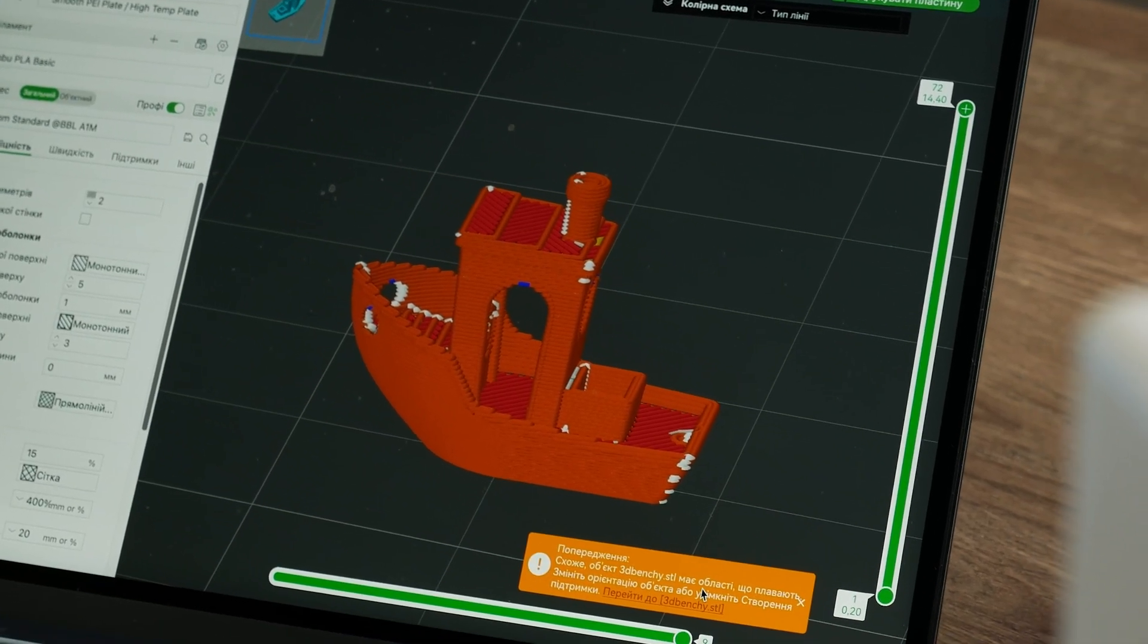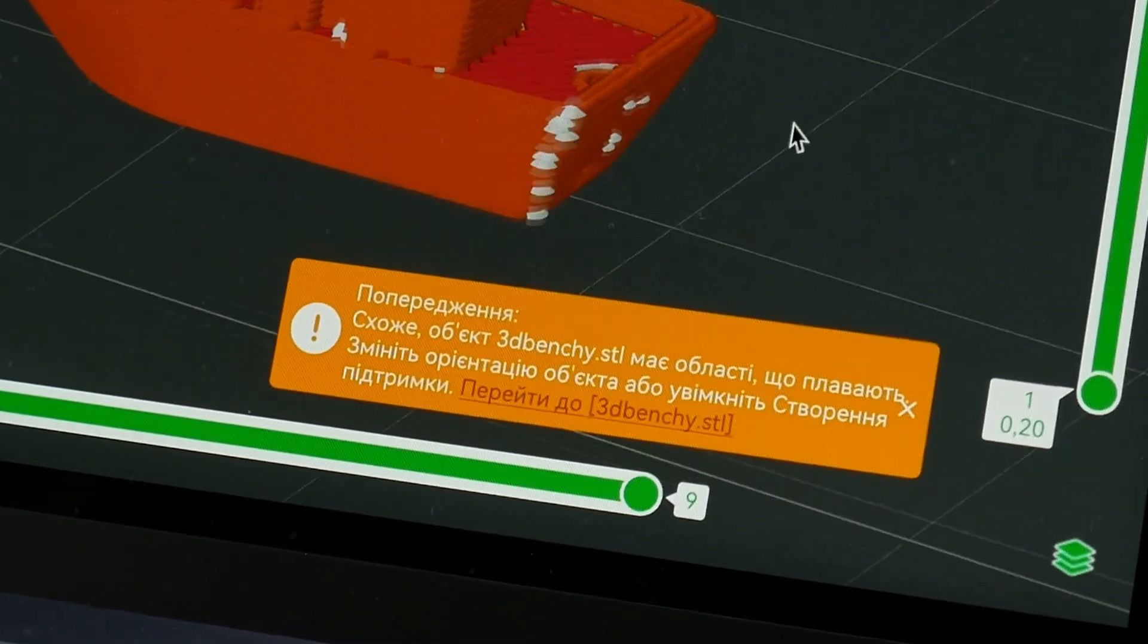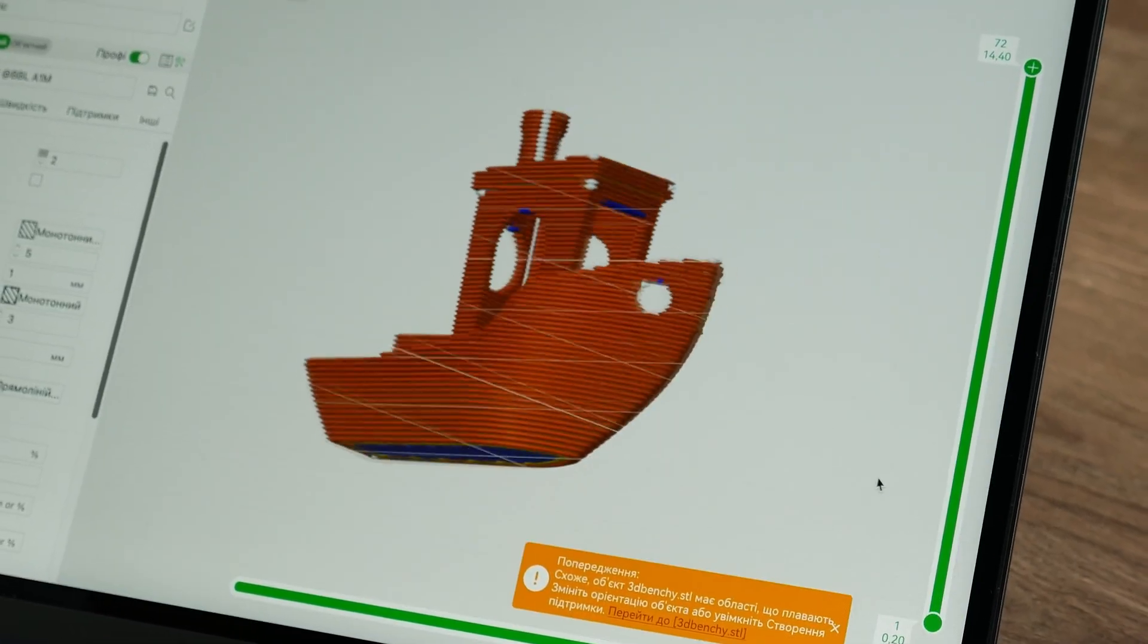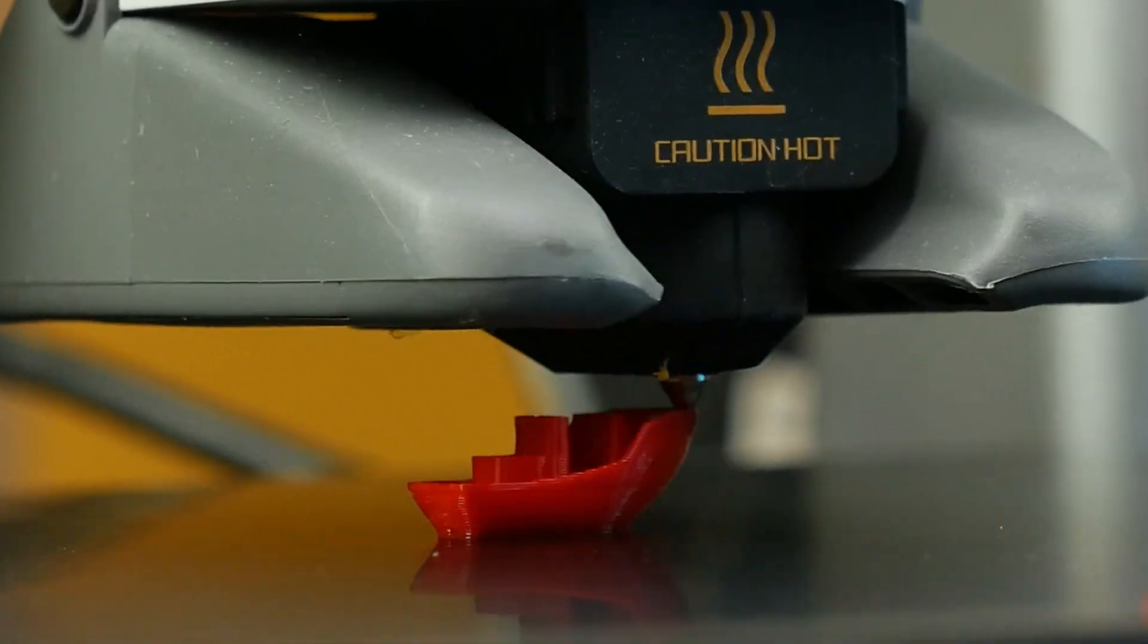Ah, we have a problem. Here is the warning. Looks like objects are floating. I'll change the outer perimeter and make lines thinner. And hope it helps. And it works.